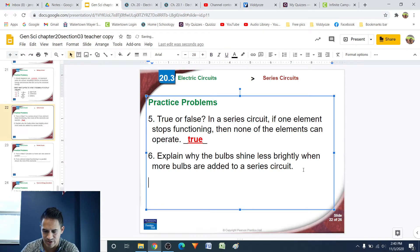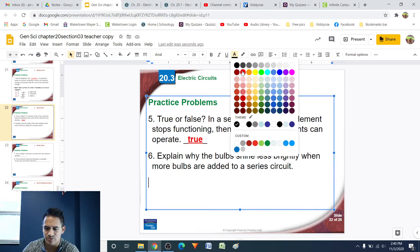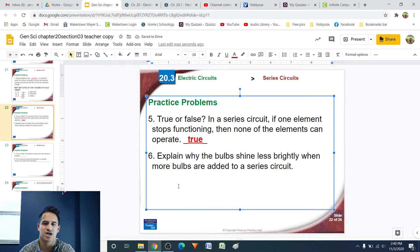Number 6, it says, explain why the bulbs shine less brightly when more bulbs are added to a series circuit. Okay, so this was mentioned in the video, but when you add more objects onto a series circuit, you are increasing the resistance of the whole circuit because there's more things that the electrons have to flow through. When there's more resistance, that's going to decrease your current, and with less current, there means that there's less energy going through the circuit, so each object is going to get less energy and therefore shine less brightly.